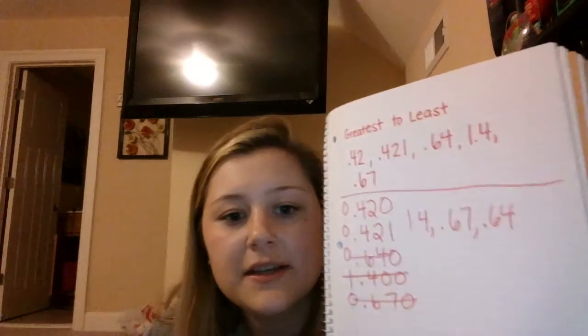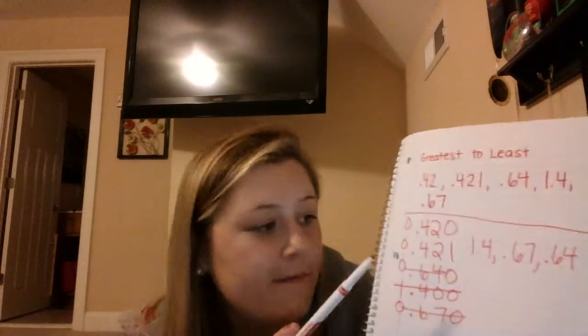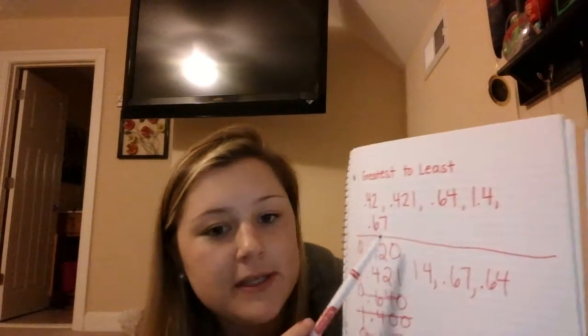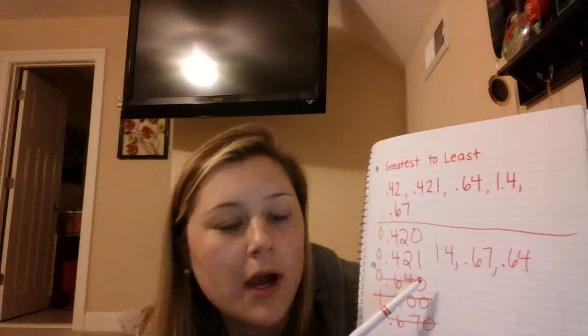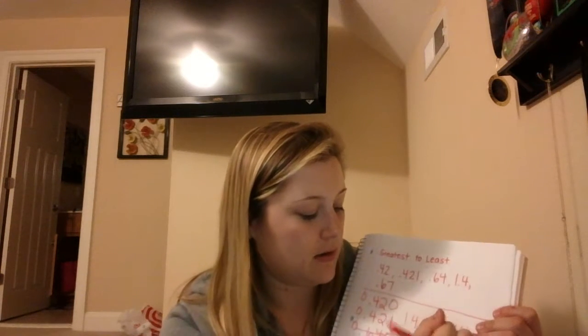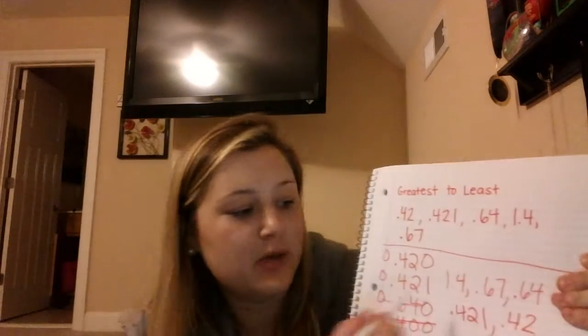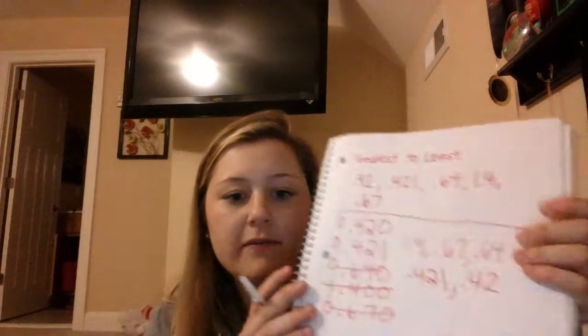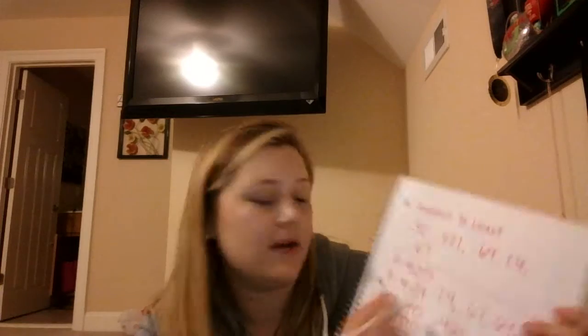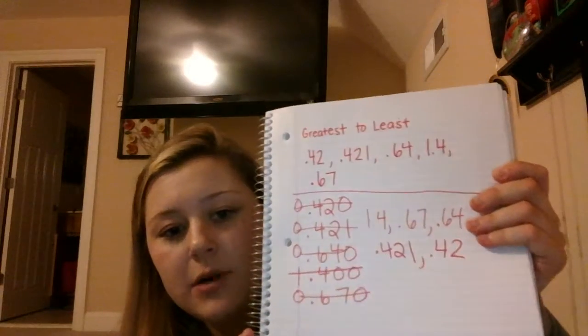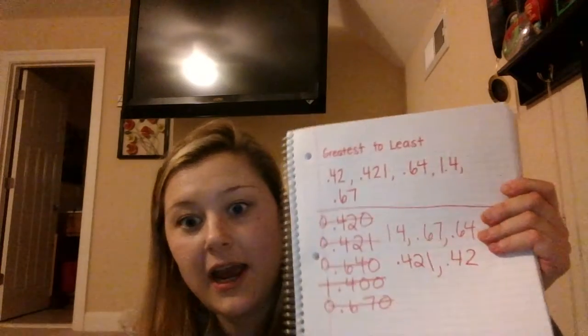This last one is the tricky one. We have 4, 2, then 4, 2, 0, and 1. I know the 421 thousandths will actually be bigger than the 42 hundredths. So I've placed them in order. Now that I've compared all of them, I'm just going to cross them all off and know that I have them in order.